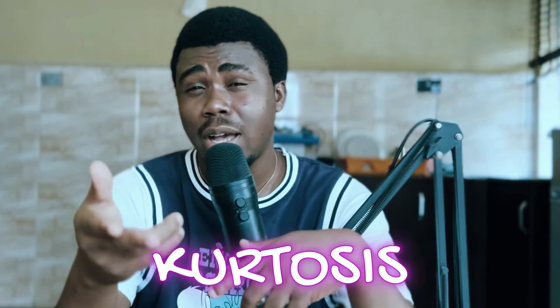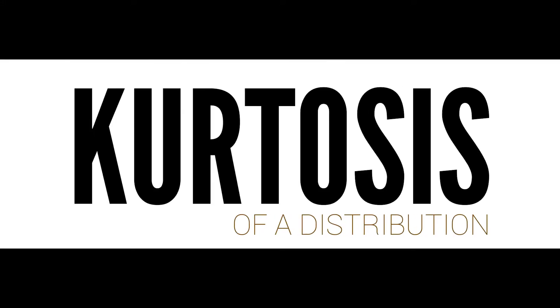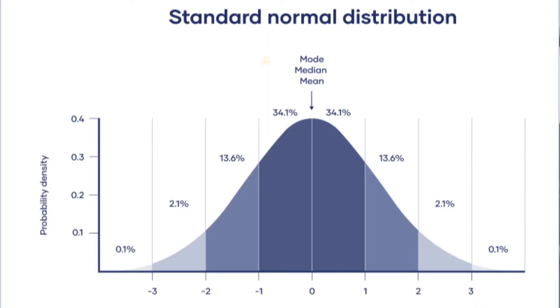So the first question you're asking yourself is: what is kurtosis? Kurtosis is the measure of how sharp the peak of a distribution is, or how heavy the tails of a distribution are. The peak is the tallest part of the distribution, and the tails are the ends of the distribution.